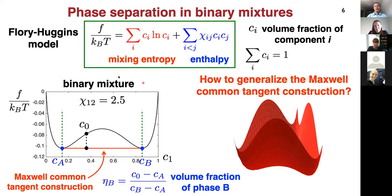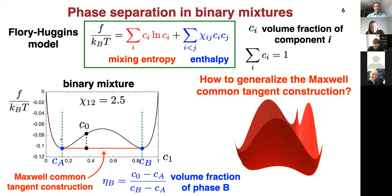We assume the system is incompressible so that the sum of all volume fractions equals one. Chi_ij is a matrix that encodes pairwise interactions between different types of molecules. In any classical thermodynamics course, when you study a binary mixture, if the free energy as a function of concentration is non-convex, then in the region between these two green lines, you can lower the free energy by phase separating into a region with concentration C_A and another with concentration C_B. You can find the compositions of these two phases using the Maxwell common tangent construction.